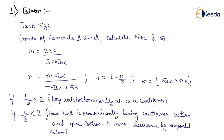If L by B ratio is greater than 2, the long wall predominantly acts as a cantilever. If L by B is less than 2, the lower part predominantly has cantilever action and the upper portion has resistance by horizontal action.